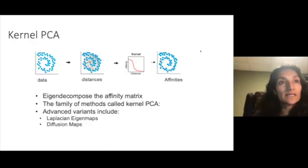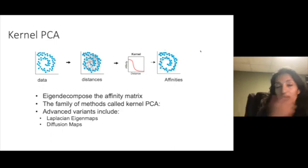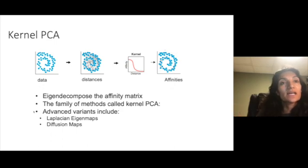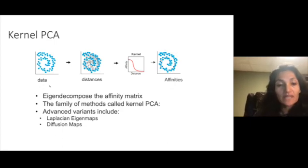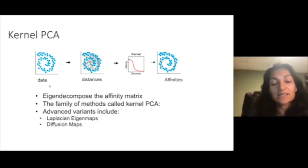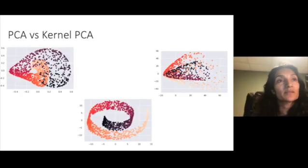So basically, kernel PCA can be summarized usually as the process of going from data to distances to affinities via kernel function and then eigen decomposing the affinity matrix. There's a whole family of methods that does this. And advanced variants include Laplacian eigenmaps and diffusion maps. But today we're going over sort of a vanilla variant of this, where you just take an affinity matrix, you eigen decompose it.